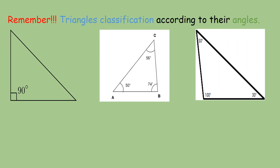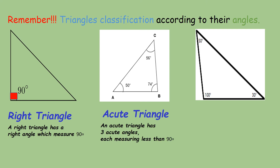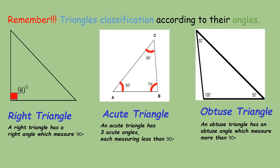These are the things to remember when we classify triangles according to their angles. For a right triangle, it has a right angle which measures 90 degrees. For an acute triangle, it has all three acute angles measuring less than 90 degrees. And for an obtuse triangle, it has an obtuse angle which measures more than 90 degrees.